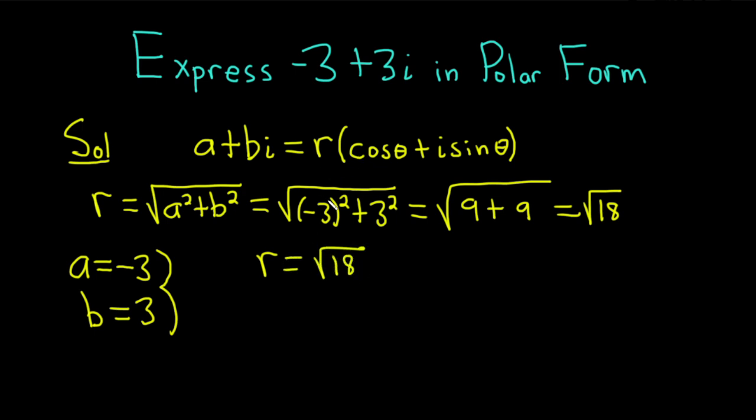And it can be simplified. When I think of the largest factor of 18 that's a perfect square, that would be 9. This would be the square root of 9 times the square root of 2. And the square root of 9 is 3, so this is 3 root 2. So r is equal to 3 square root of 2.